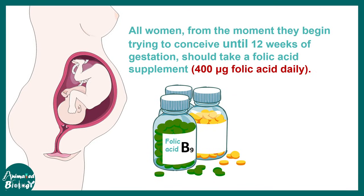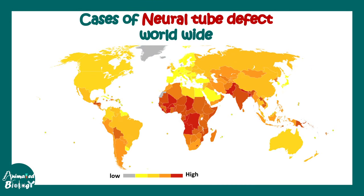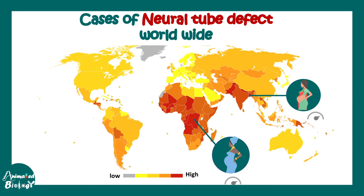That is why all women who are thinking of getting pregnant should have at least 400 micrograms of folic acid daily during pregnancy. The incidence of neural tube defects, especially anencephaly, is found more in developing countries like Africa and India, and is less common in developed countries.